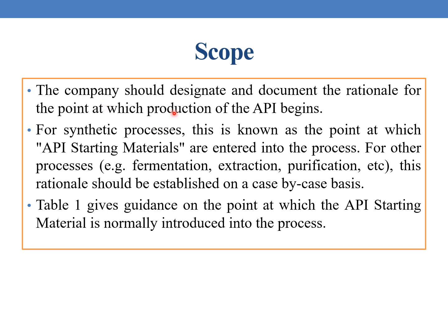The company should designate and document the rationale for the point at which production of the API begins. For synthetic processes, this is known as the point at which API starting materials enter into the process. For other processes — such as fermentation, extraction, or purification — this rationale should be established on a case-by-case basis.